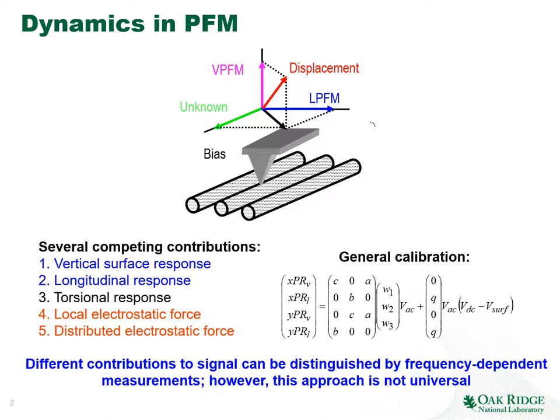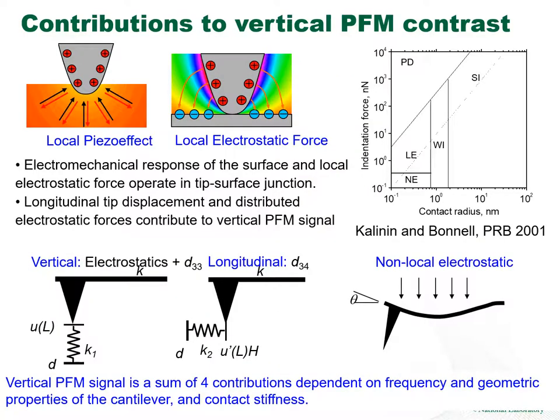In general we have four observables: we can measure vertical and lateral PFM signal when the cantilever is oriented in one orientation versus the surface, and when the cantilever is mechanically rotated by 90 degrees. So we have four PFM signals in vector PFM, and the general calibration involves establishing the relationship between the surface displacement vector, the electrostatic forces, and the cantilever parameters. The lateral PFM signal is easy to quantify — it is determined only by the shear displacement of the surface.